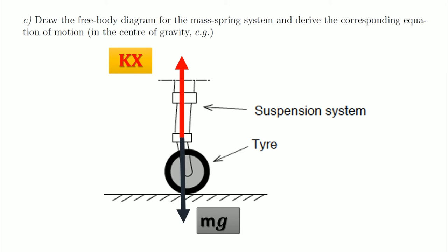In part C, I am going to display the FBD of the mass-spring system where we can see the vertical force pointing upwards of kx and the weight pointing downwards.